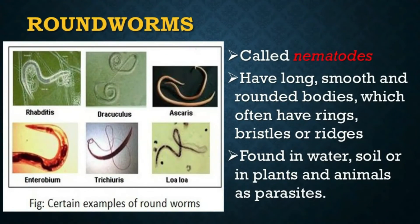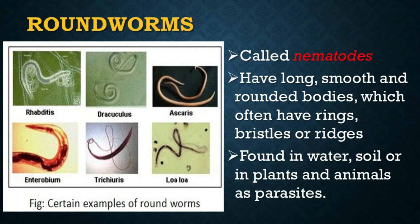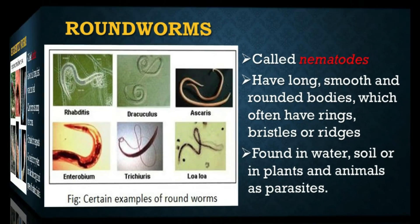Roundworms are also called nematodes. They have long, smooth, and rounded bodies, which often have rings, bristles, or ridges that aid in locomotion or protection. They are found in water, in the soil, or in other plants and animals as parasites.